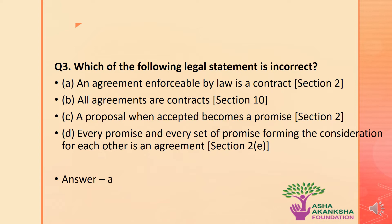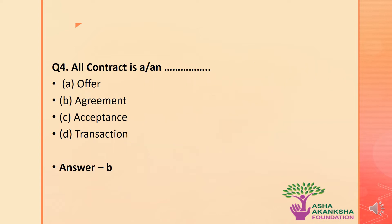The next question is a fill in the blank: all contracts are a ___. Options are: A) Offer, B) Agreement, C) Acceptance, or D) Transaction. The correct answer is option B — all contracts are an agreement, but not all agreements are contracts.